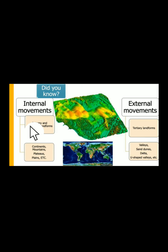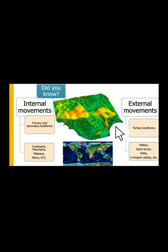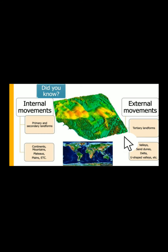Now, in the internal movements, we have primary and secondary landforms which are formed — meaning that due to internal movements, we can have the formation of primary and secondary landforms. But, my dear students, due to external movements, that is, movements occurring above the surface of the earth, we can have landforms that are tertiary, that is, the tertiary landforms.